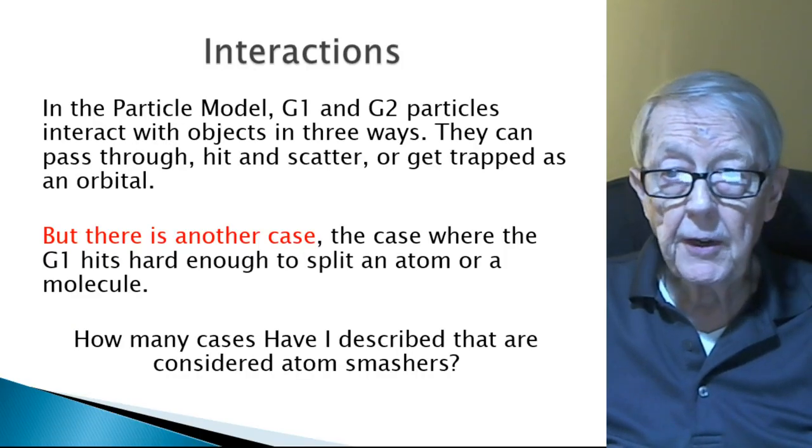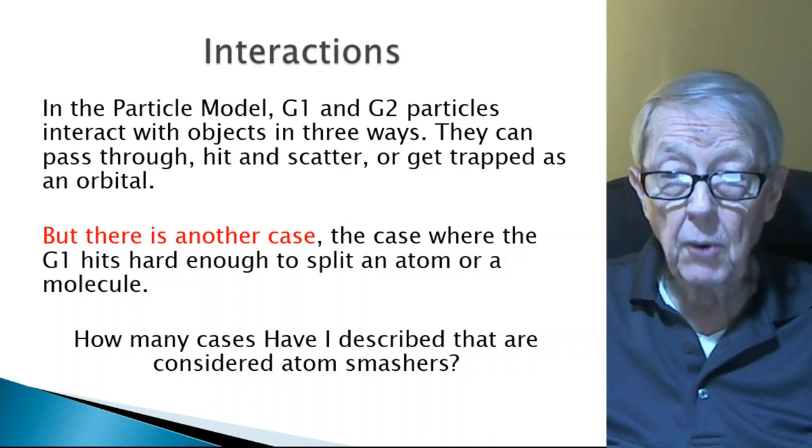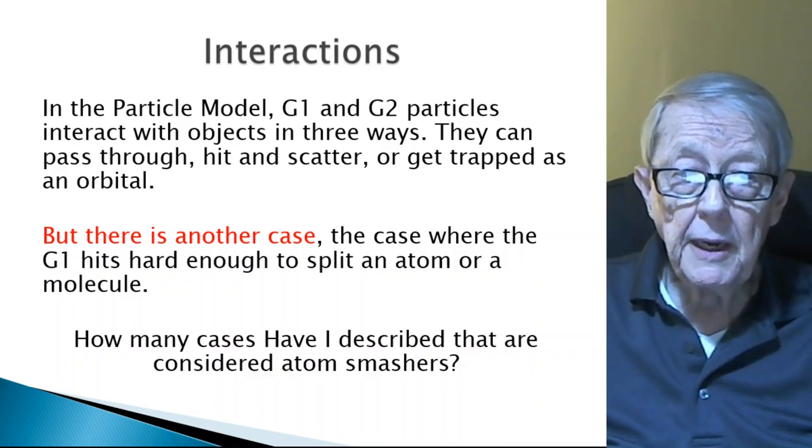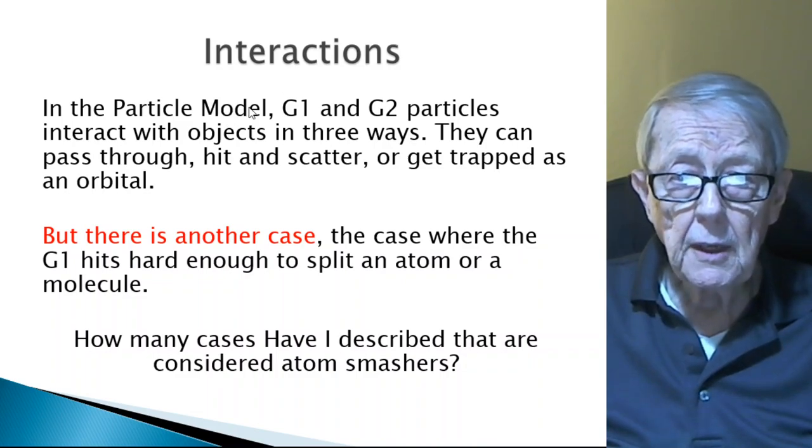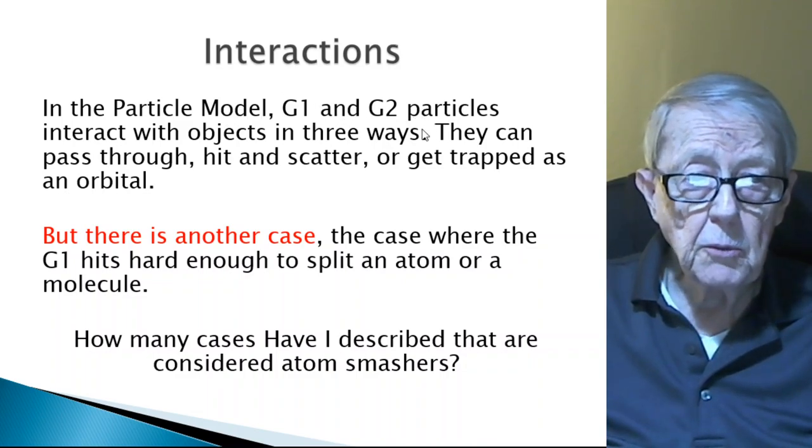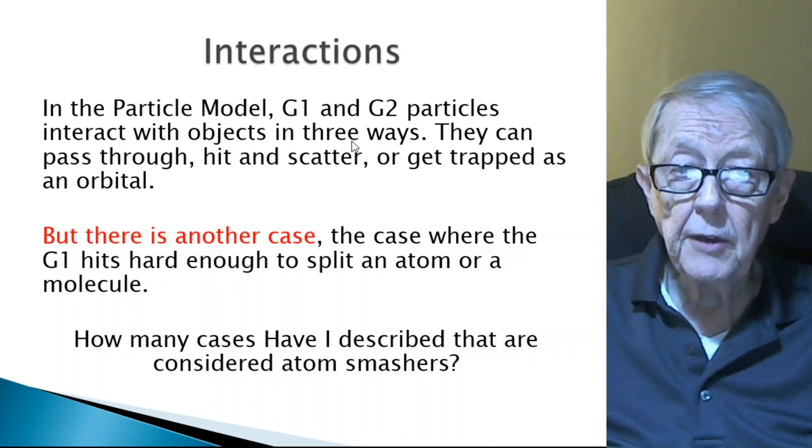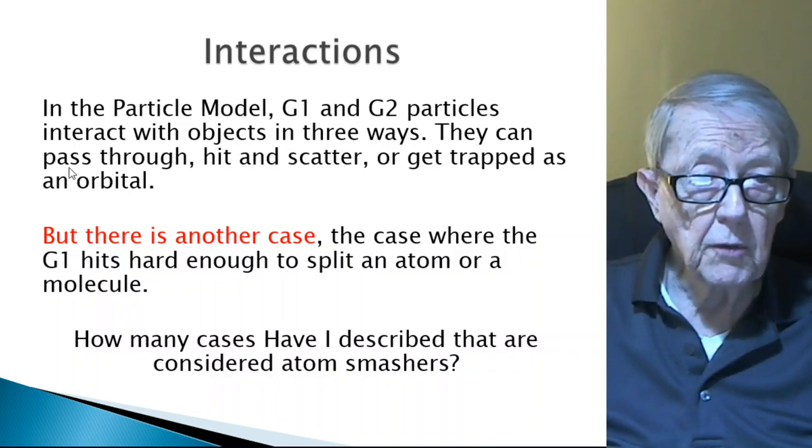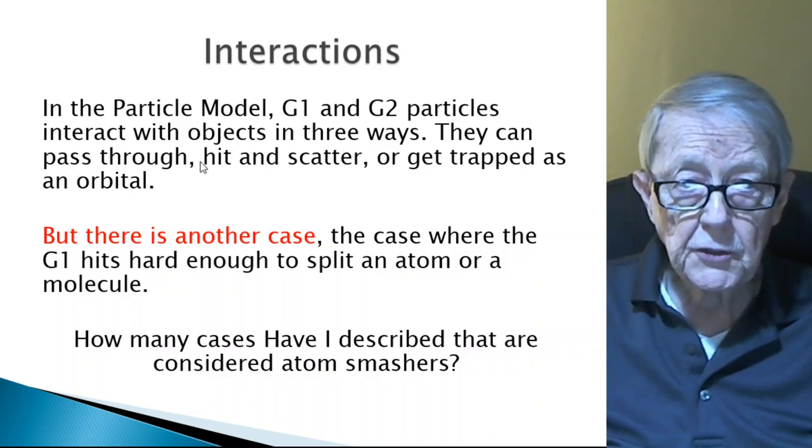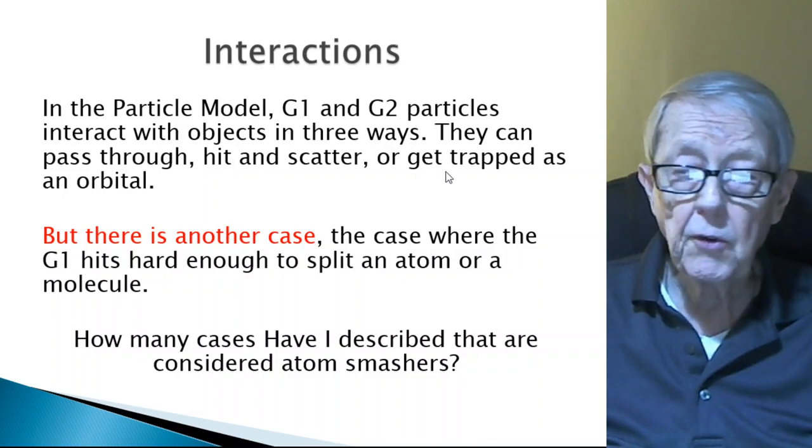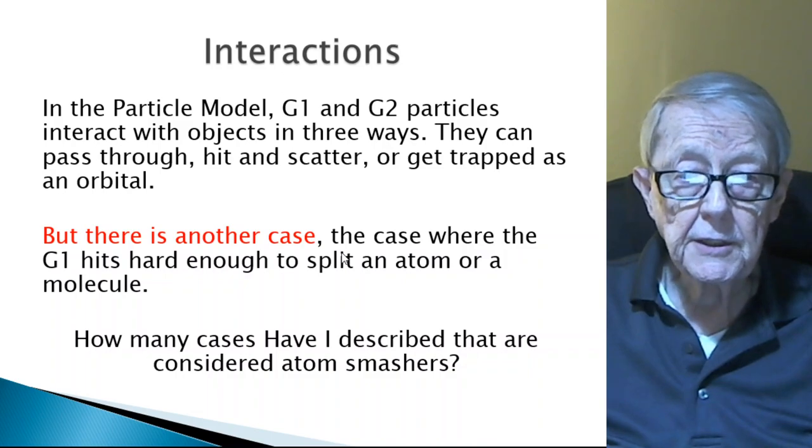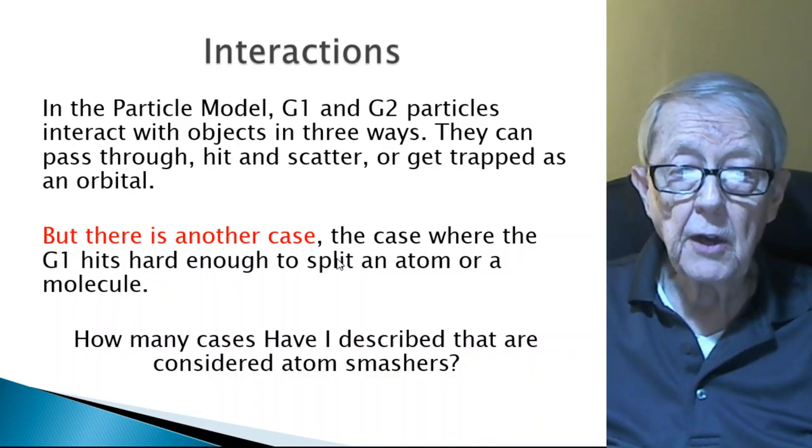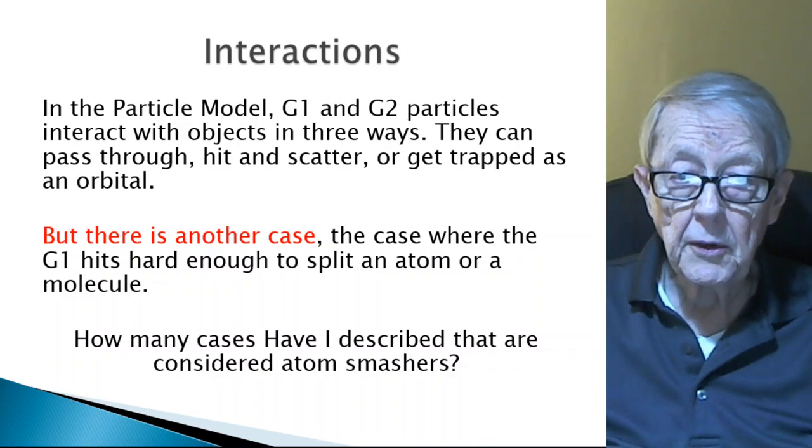I've covered interactions over and over again because it is important. Not only does the particle model show where the G1 and G2 particles interact in three ways - they pass through, they hit and scatter, or get trapped as an orbital - but there is another case: where it's hard enough to split an atom or a molecule.